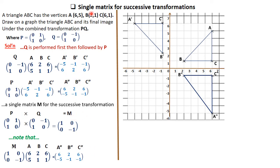So a single matrix for the successive transformation representing PQ would be matrix M, which is [0,1; 1,0]. To add to that: M equals the matrix PQ. It is strictly in that order — P times Q.